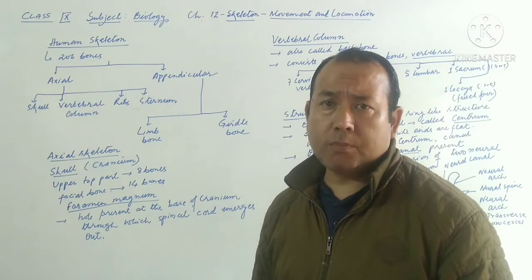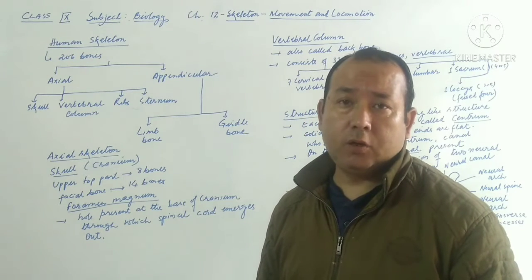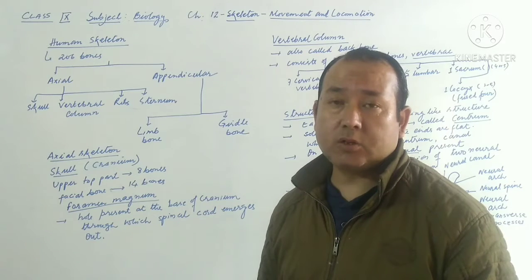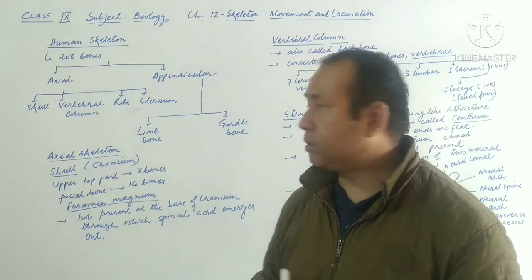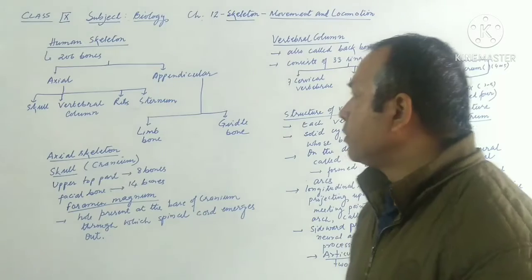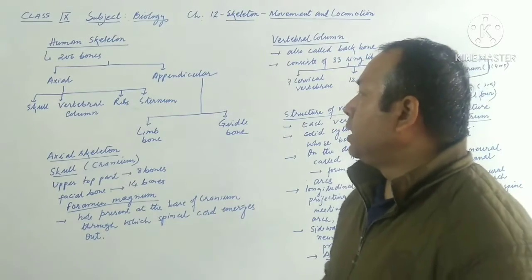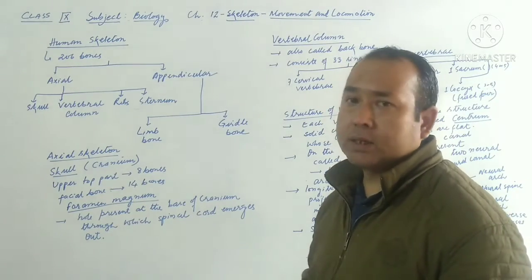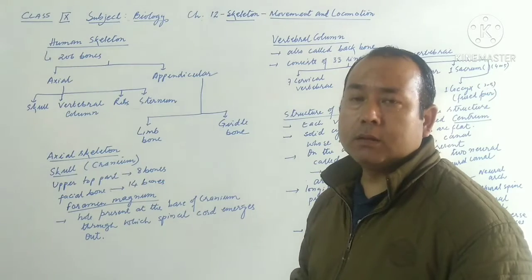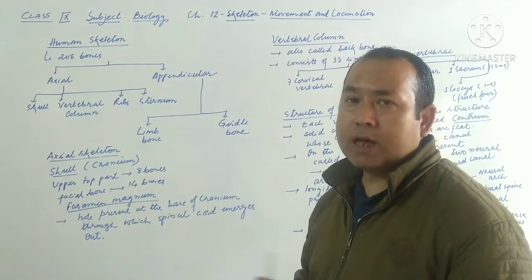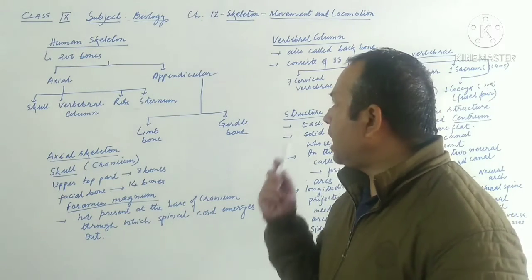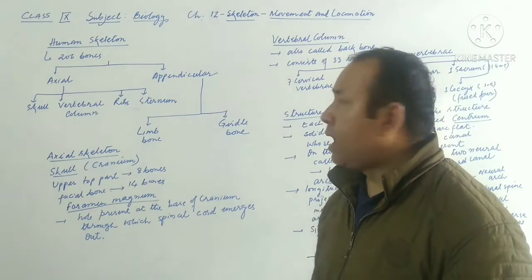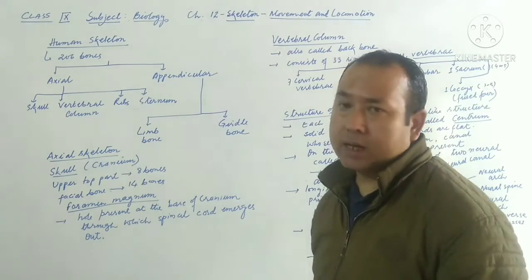The total number of bones present in a human being — the human skeleton consists of 206 bones, as you all know. These 206 bones, or the human skeleton, are mainly categorized into two groups: axial skeleton and appendicular skeleton.